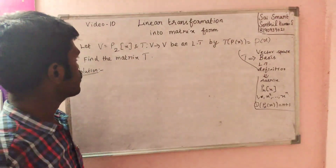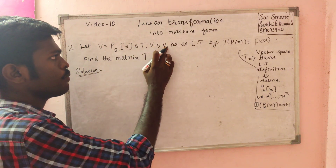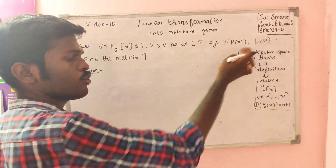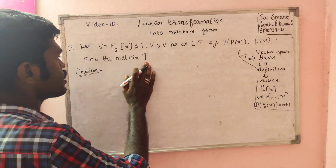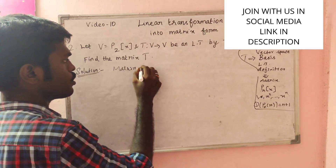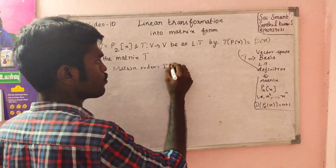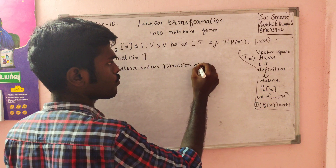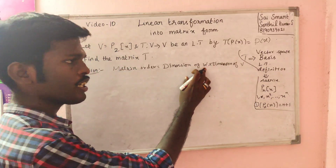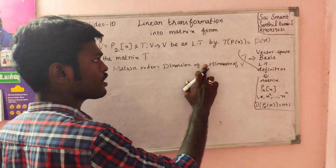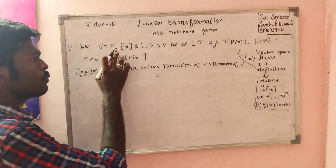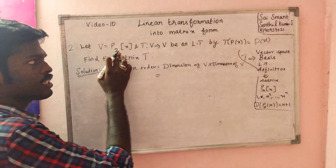Now problem 2: V equals W equals P2 of x, and T of P of x is an integration. Find the matrix of T. Matrix order equals dimension of W by dimension of V. Since both are P2 of x, dimension is 3, so the matrix is 3 by 3.